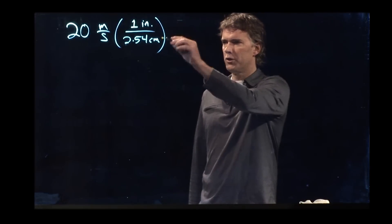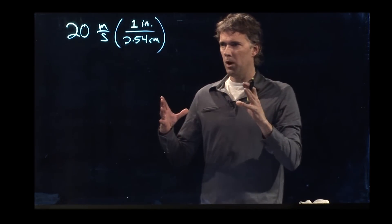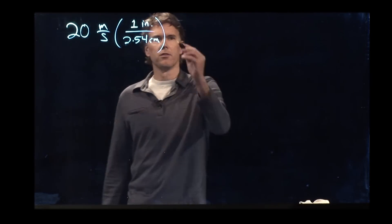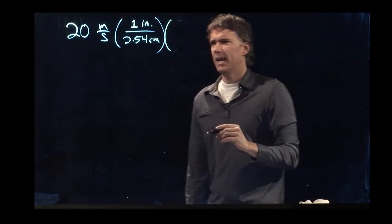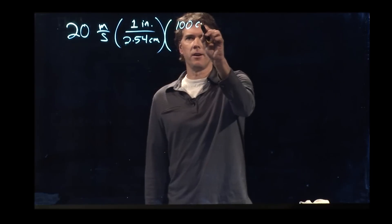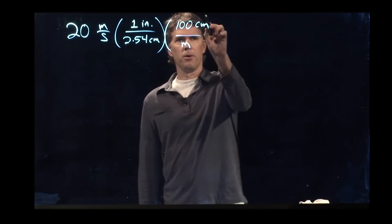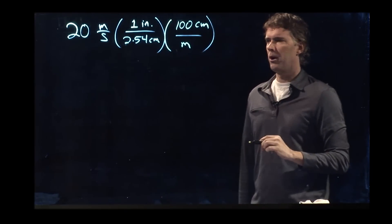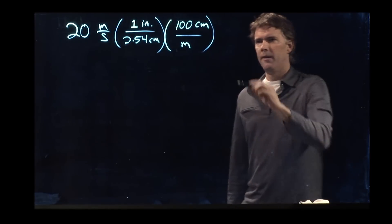And what we remember is that one inch is 2.54 centimeters. This stuff here, in parentheses, is the number one. One inch over 2.54 centimeters, that's the number one. It's just in these funky units. All right, but that doesn't quite get us where we need, because we have to get centimeters out of there. So we remember that is 100 centimeters per meter.